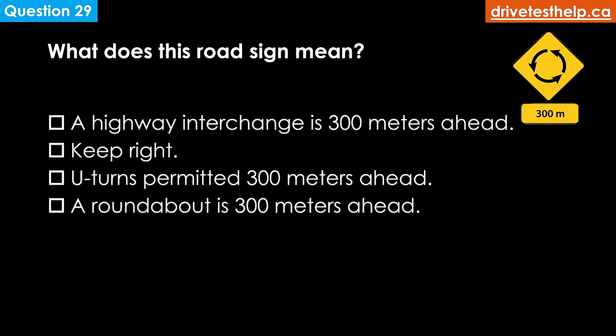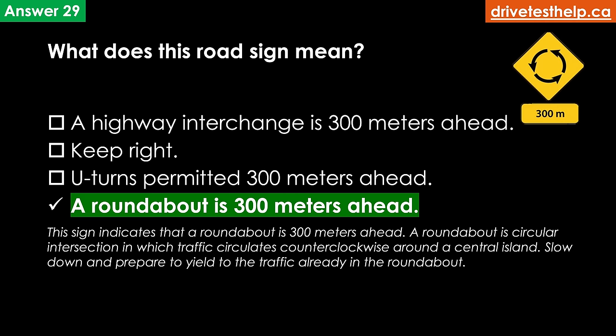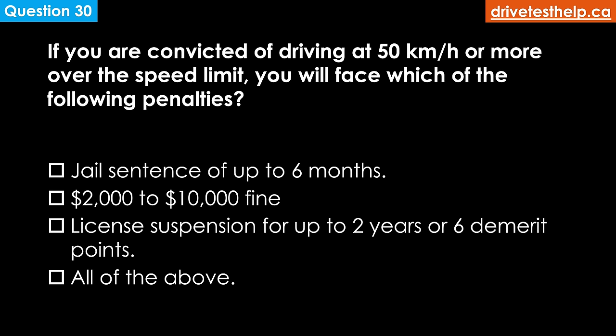What does this road sign mean? Options: a highway interchange is 300 meters ahead; keep right; U-turns are permitted 300 meters ahead; a roundabout is 300 meters ahead. The correct answer is a roundabout is 300 meters ahead. A roundabout is a circular intersection in which traffic circulates counterclockwise around a central island. Slow down and prepare to yield to traffic already in the roundabout.